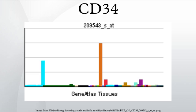The CD34 protein is a member of a family of single-pass transmembrane sialomucin proteins that show expression on early hematopoietic and vascular-associated tissue. However, little is known about its exact function.